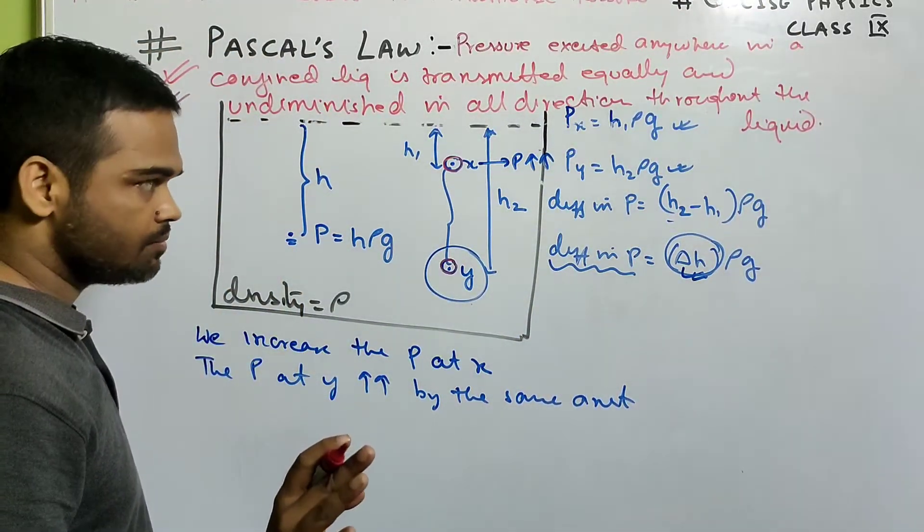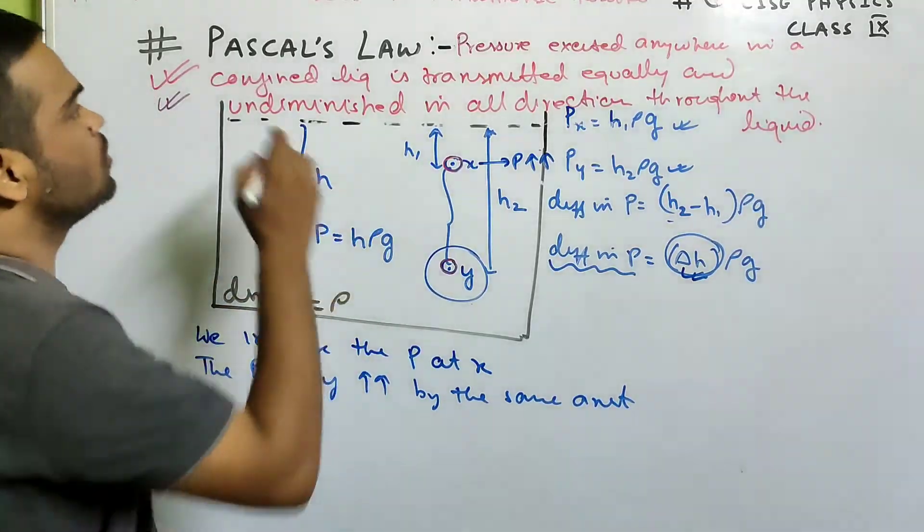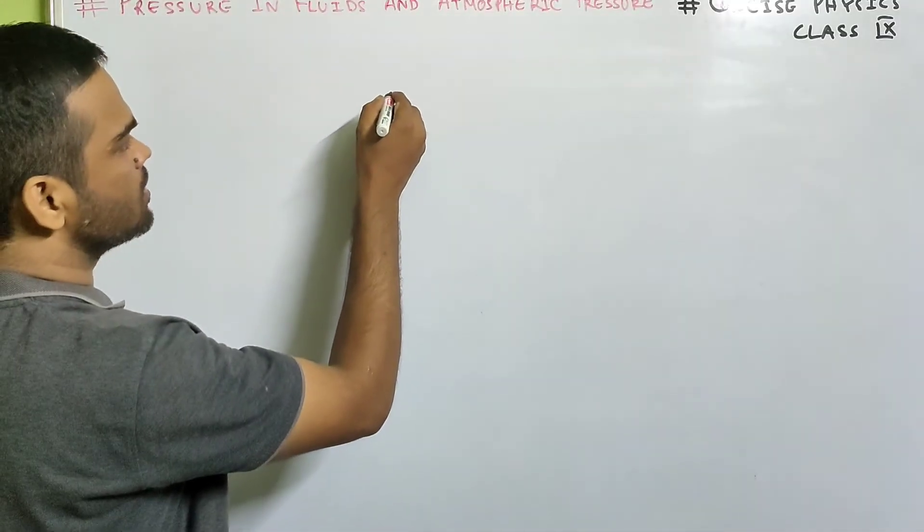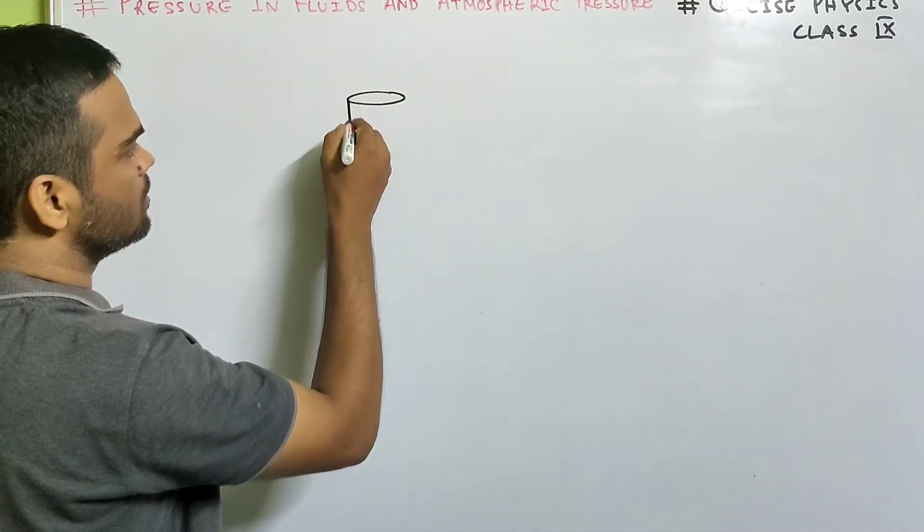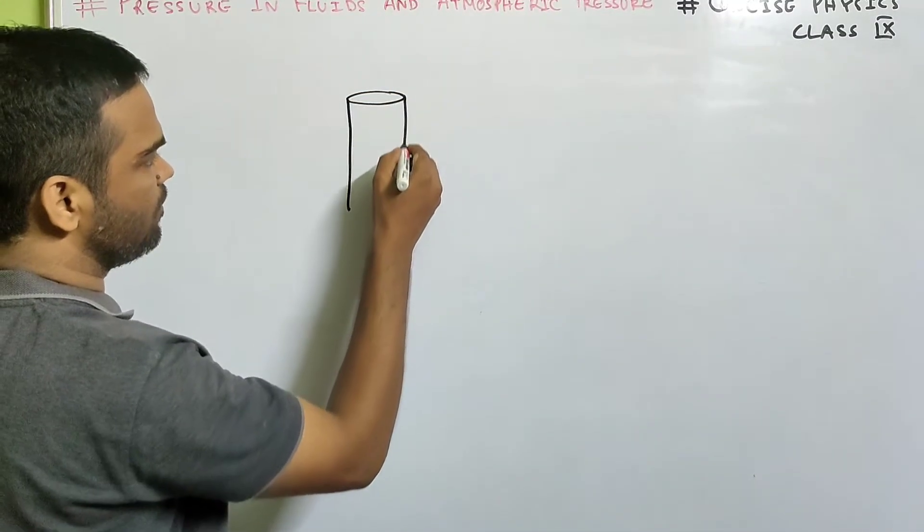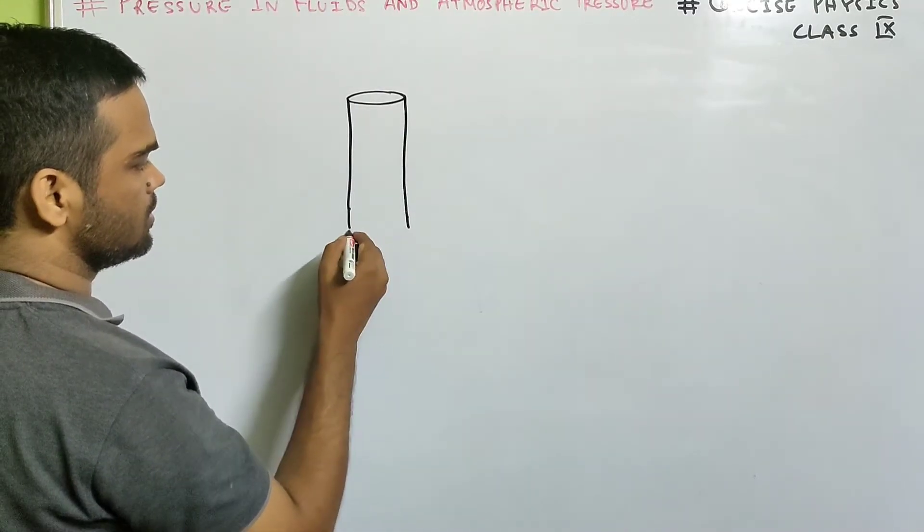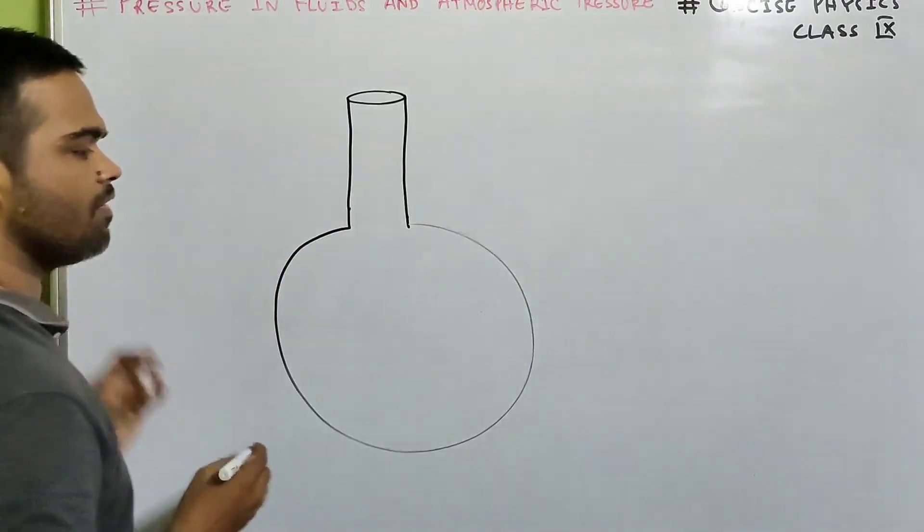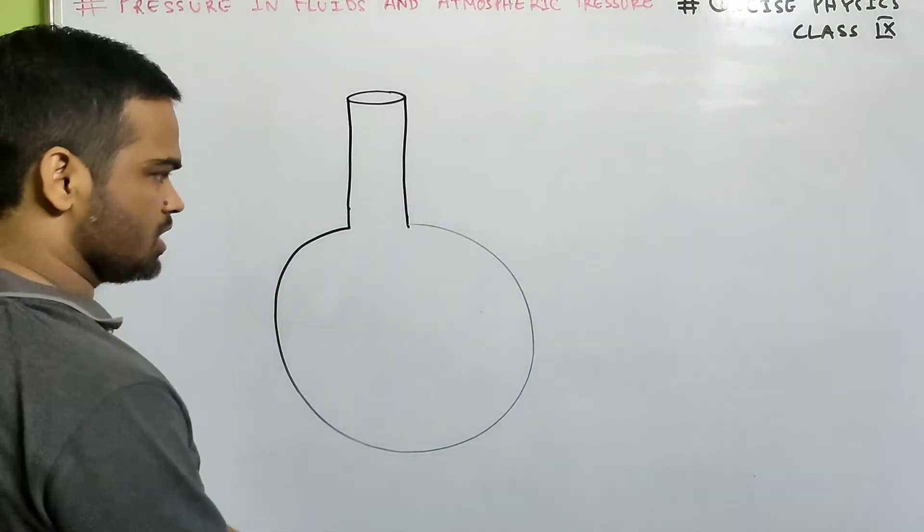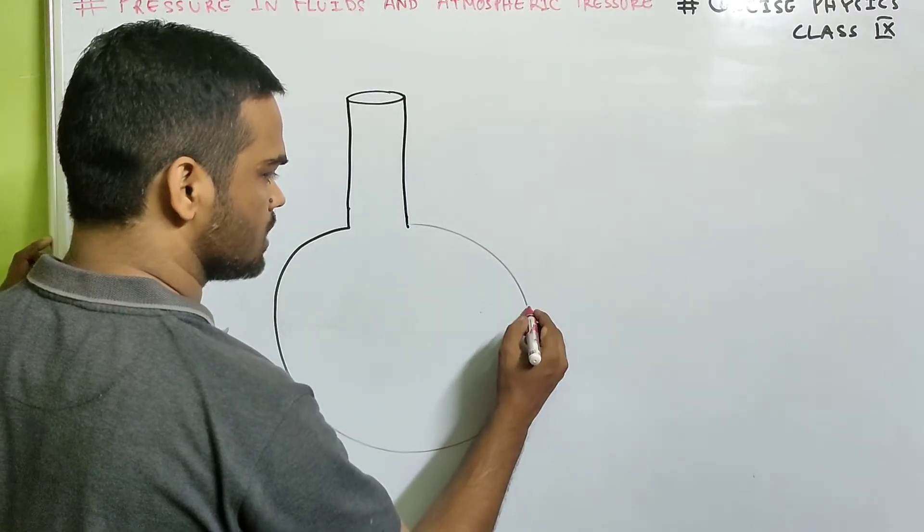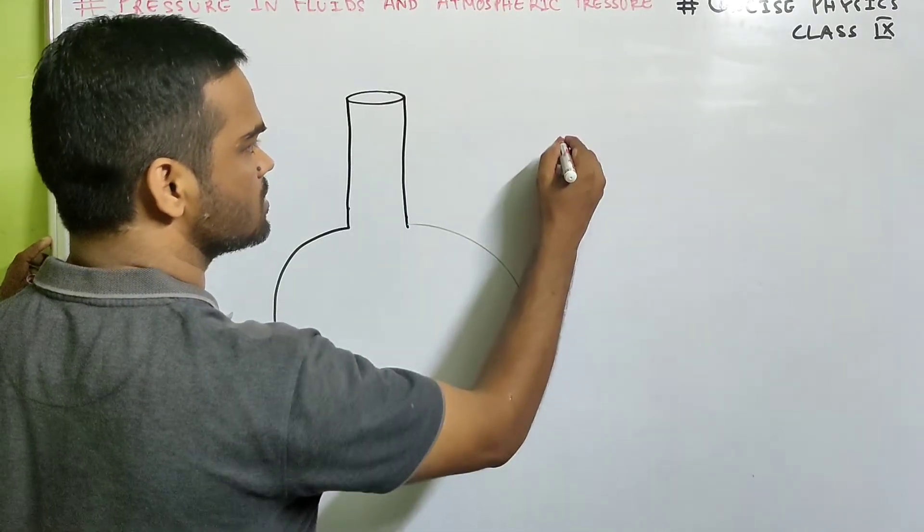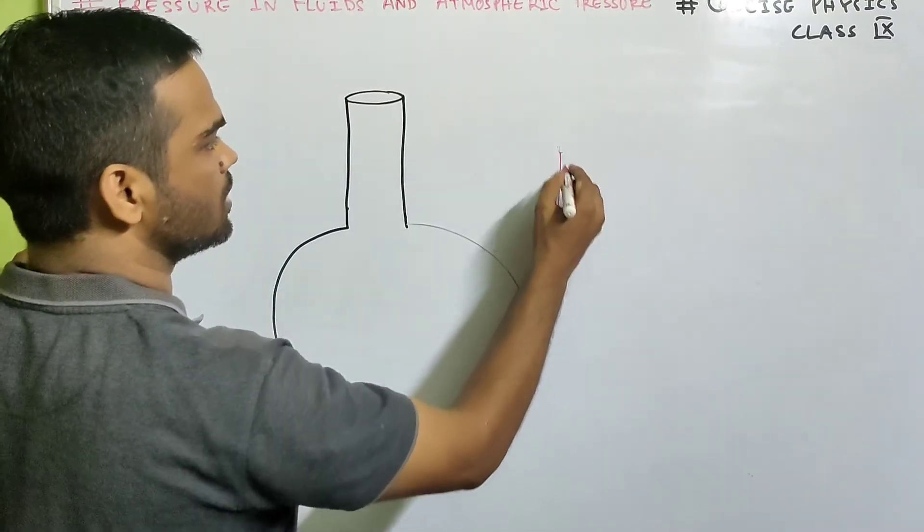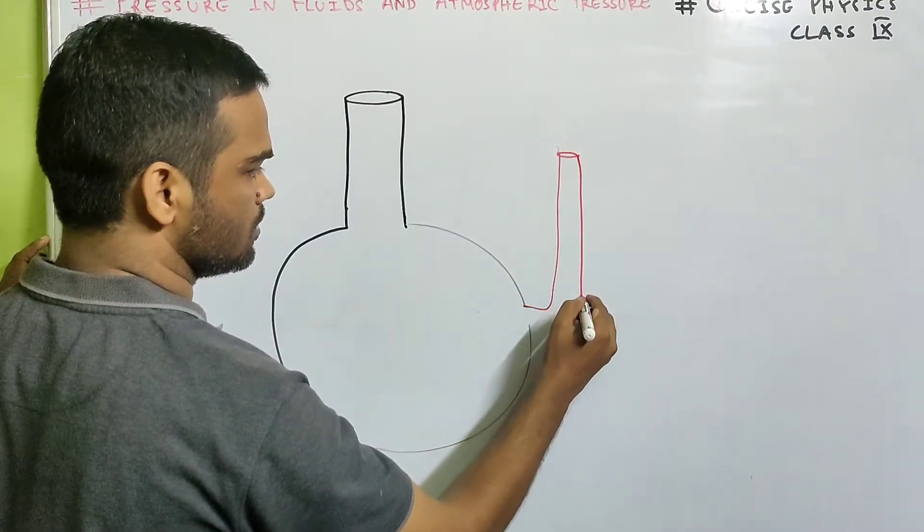Am I clear? We'll do an experiment to show Pascal's law. Now look at this. Suppose we take a flask like this, which has got some side tubes like this. Suppose till here.